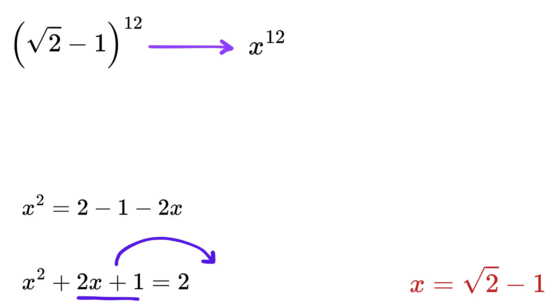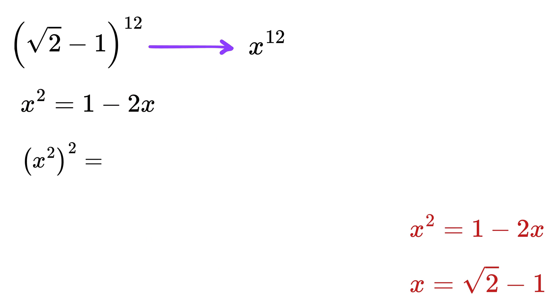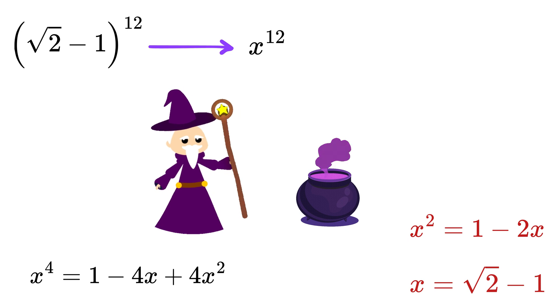Now let us square this again on both sides to get x^4 = (1-2x)^2. Expand this to get 1 - 4x + 4x^2, so x^4 = 1 - 4x + 4x^2.